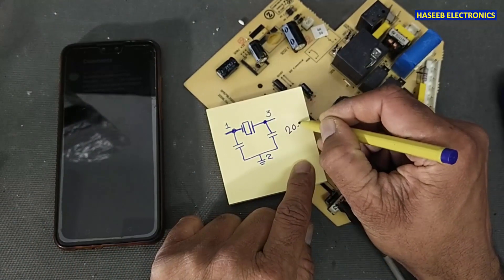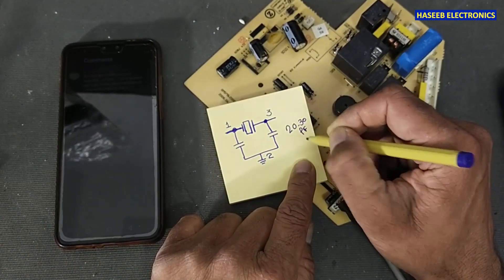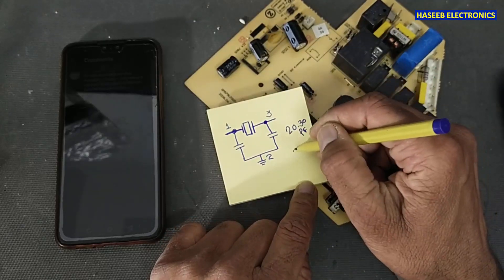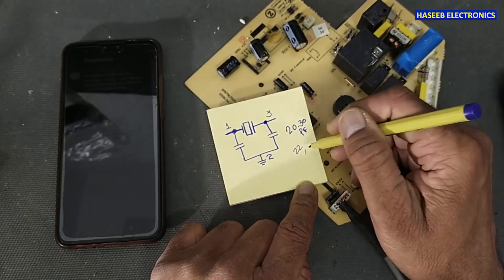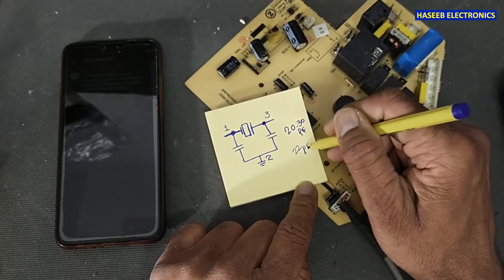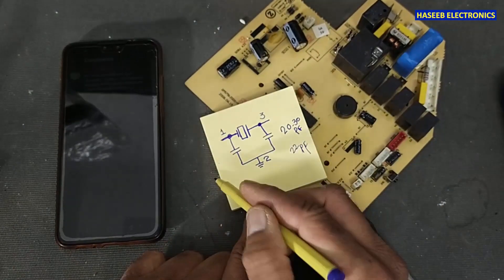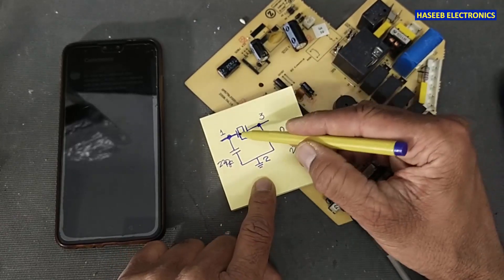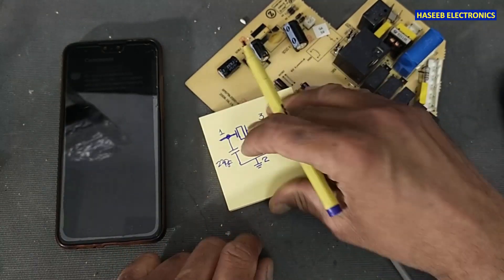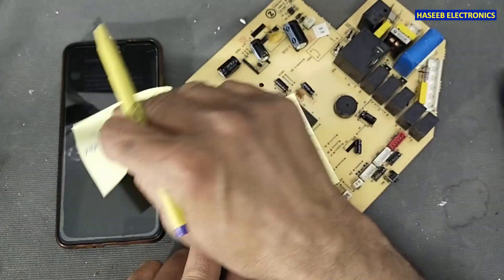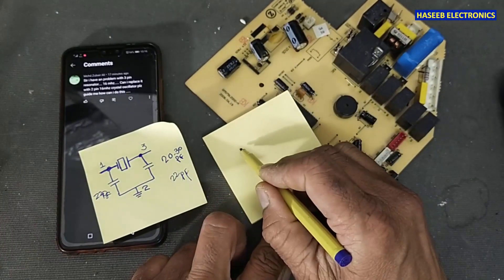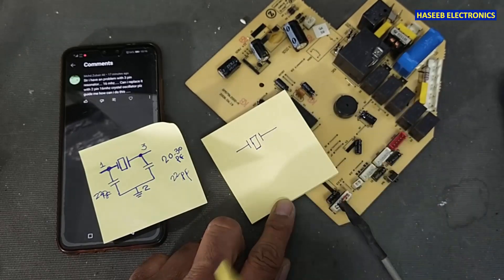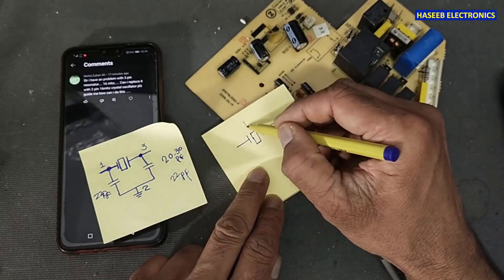20 to 30, you can use 22 picofarad, 30 picofarad here and here. 20 to 30 picofarad here. If you want to use two-pin, this is two-pin crystal oscillator 16 megahertz.